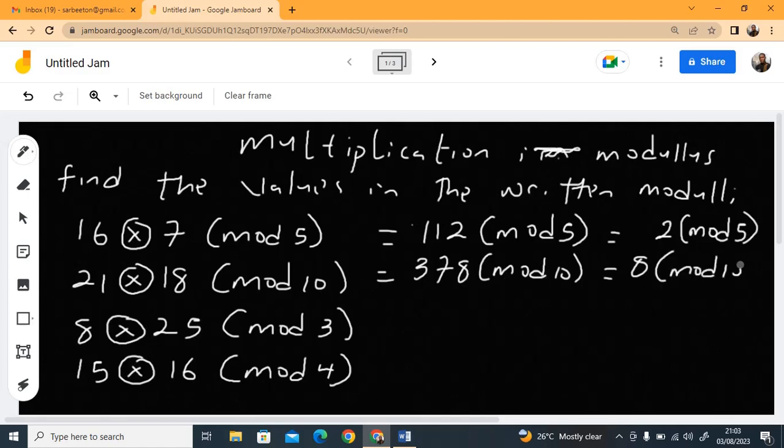This is very simple. Multiplication doesn't have any problem. Then you also have 8 times 25. 8 times 25 is 200. So 200 mod 3. 200 divided by 3, that should give us 66. So when you multiply 66 times 3, that's 198.